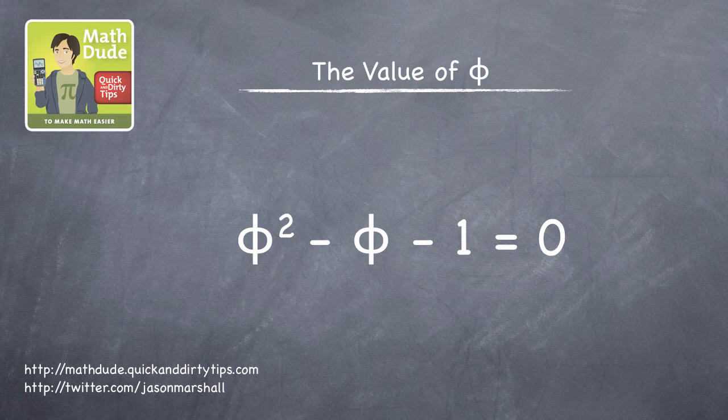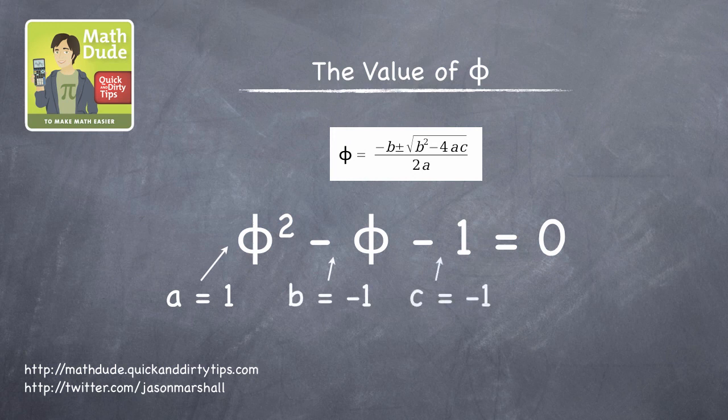So phi squared minus phi minus 1 equals 0 is the quadratic equation to solve. Let's use the trusty formula for the solution to a quadratic equation. Here, a equals 1, and b and c are both equal to negative 1. There are two solutions to the quadratic equation...